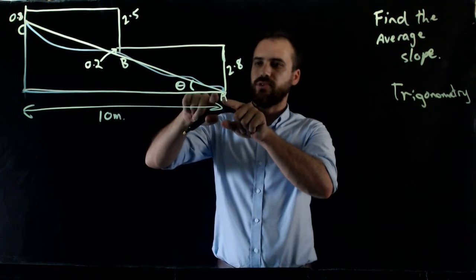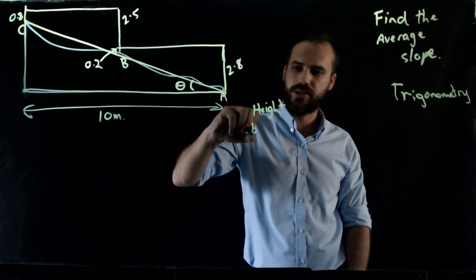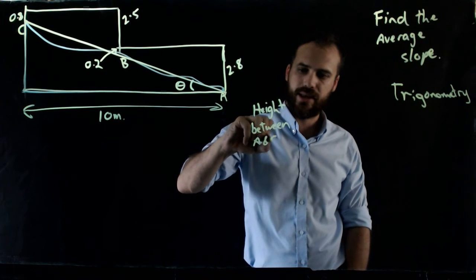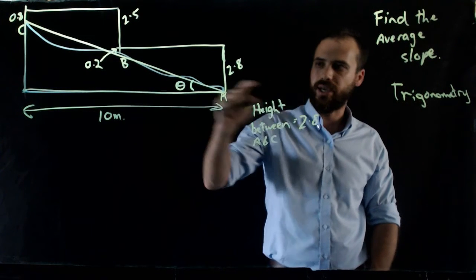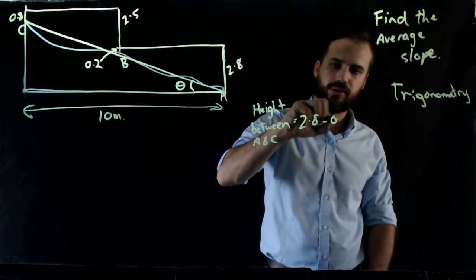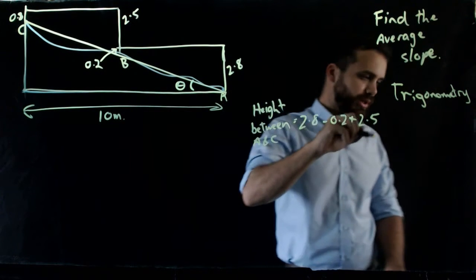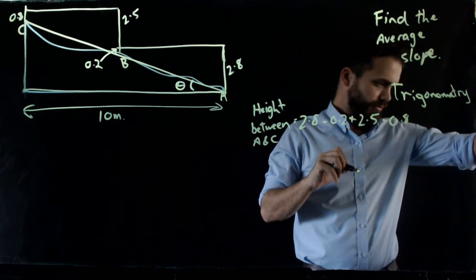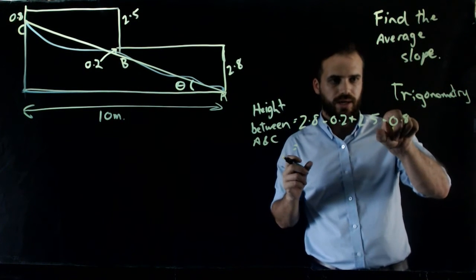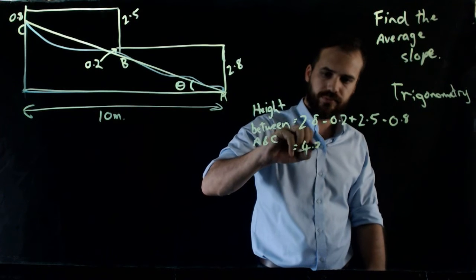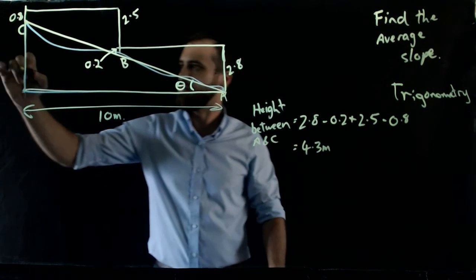In order to find the height between point A and point C, all I need to do is calculate 2.8 minus 0.2, plus 2.5 minus 0.8. If I do that, that's 2.6, 5.1, 4.3. So the height between point A and point C is 4.3 metres.